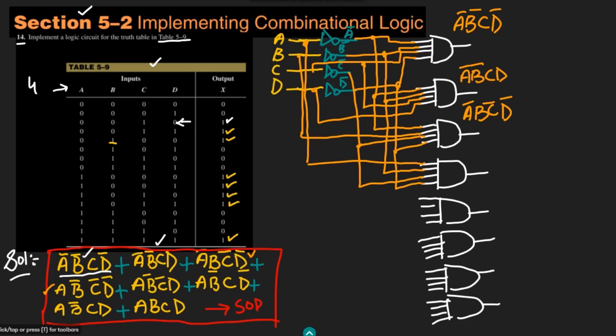The fourth gate's implemented term is A, B complement, C complement, D complement. The fifth term is A, B complement, C complement, D. A comes from here, B complement is from the inverter, C complement is from here, and then D is connected directly. You can see how complex the process is — this is the same procedure used inside real circuits and you will see a lot of wires just like this. This is also good practice for that.